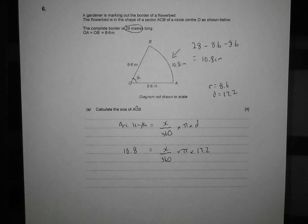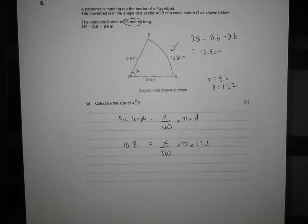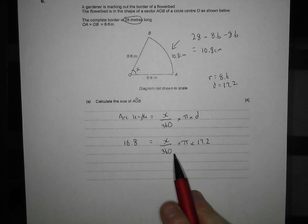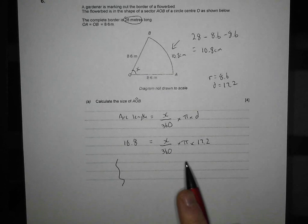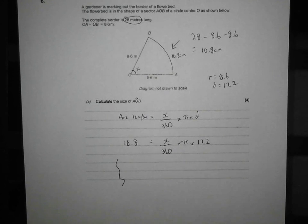Now, that's all well and good, but can you simplify this to get the right answer? Because we need to get x out of this. So the first thing I'm going to do is I'm going to get rid of my pi and my 17.2.